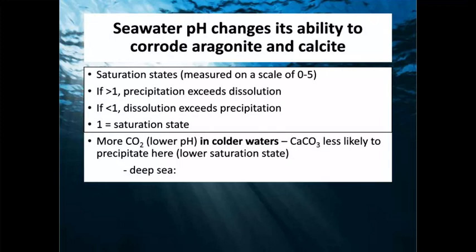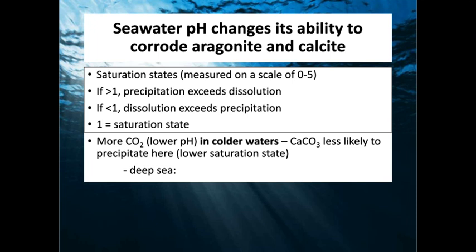The concentration of hydrogen ions affects the ability to dissolve or corrode aragonite and calcite skeletons and shells. We use a saturation or calcification state measured on a scale of zero to five — this gives an idea of whether calcification is even possible. If the saturation state is more than one, precipitation exceeds dissolution and calcification will happen. Where the saturation state is less than one, dissolution exceeds precipitation, making it very hard or impossible to maintain a shell or skeleton.